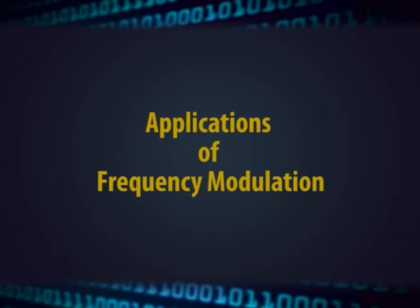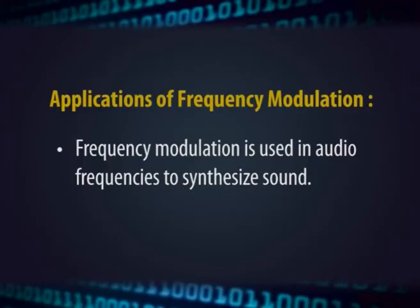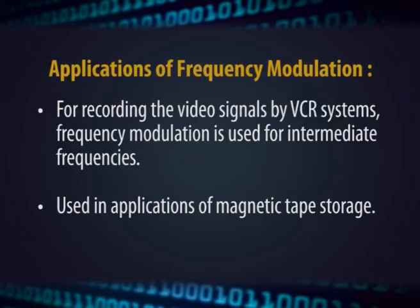Applications of frequency modulation: FM is used in radios, which is very common in daily life. FM is used in audio frequency synthesis to produce sound. For recording video signals in VCR systems, FM is used for intermediate frequency. FM is also used in magnetic tape storage applications.